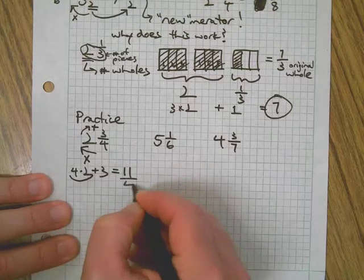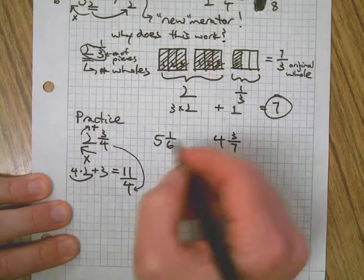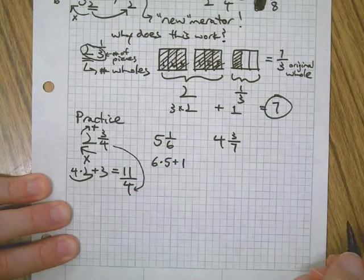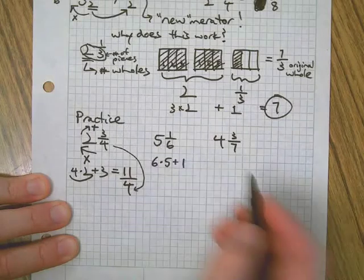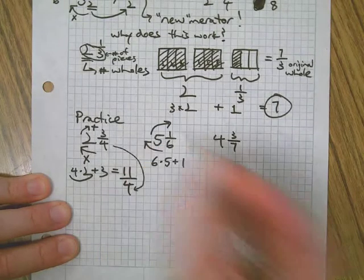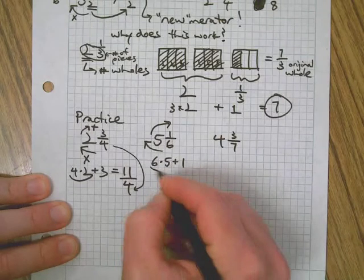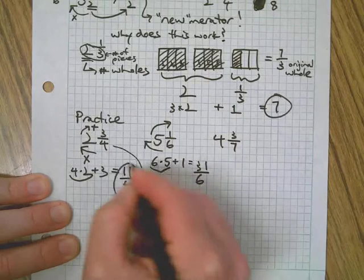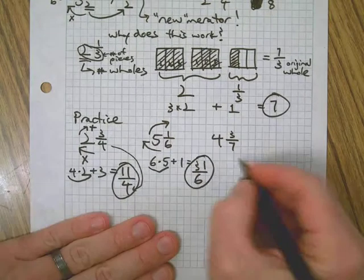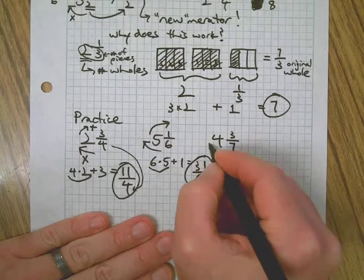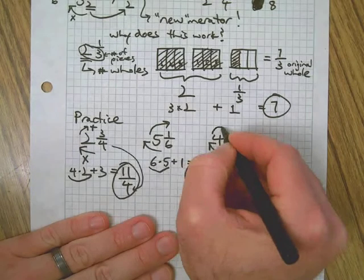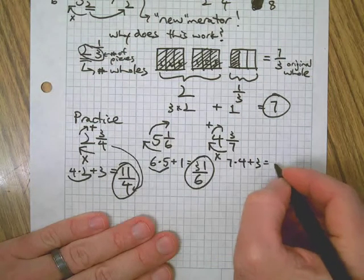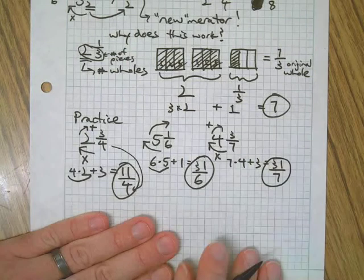So this one: six times five plus one, going around the circle, we throw the numerator on top. This is 30 plus one on top of six. Circle the answers. And the final one: seven times four, going around the circle, multiply then add. This also equals 31, this time 31 sevenths.